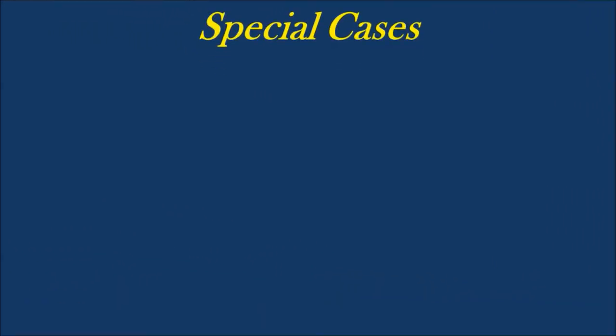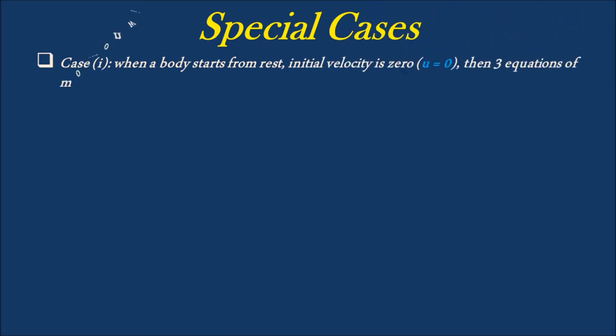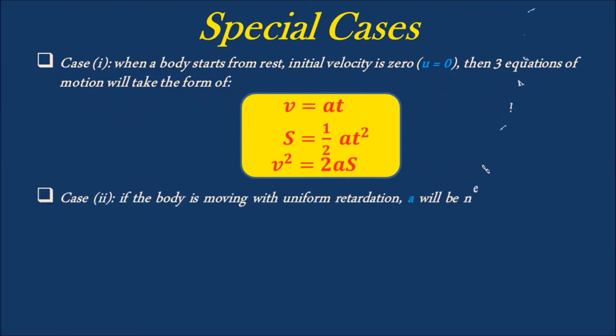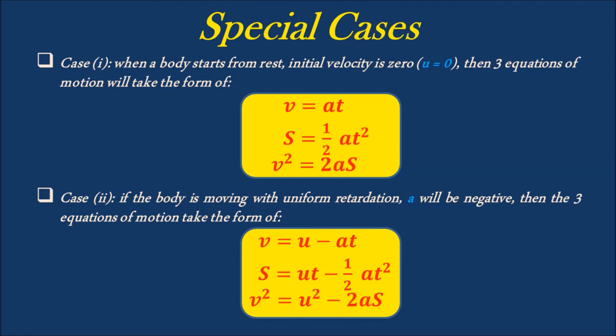Now let's discuss about the special cases related to equations of motion. Case 1: when a body starts from rest, initial velocity is 0, that is U equals 0, then the three equations of motion take the form: V is equal to AT; S is equal to half AT square; V square is equal to 2AS. Case 2: if the body is moving with uniform retardation, A will be negative, then the three equations of motion take the form: V is equal to U minus AT; S is equal to UT minus half AT square; V square is equal to U square minus 2AS.